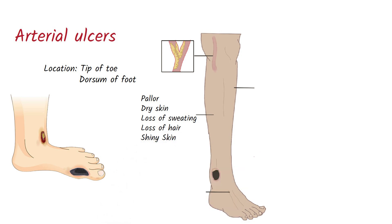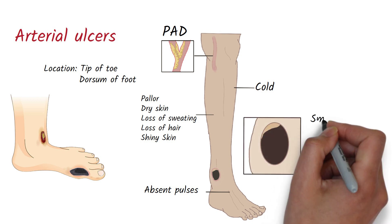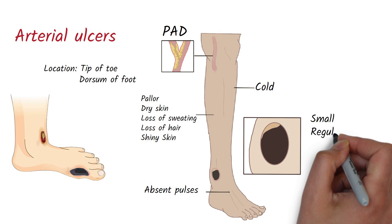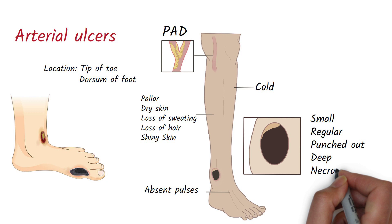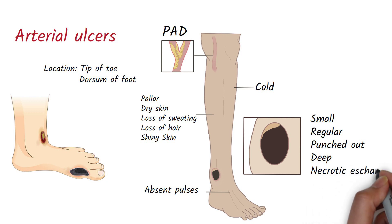In arterial ulcers there will be absent pulses and the skin will be cold to touch because of the lack of blood supply. The size of arterial ulcers is smaller than venous ulcers. They have a regular outline, a punched-out border, and the depth of the ulcer is deep. The floor of the ulcer will lack granulation tissue and therefore will look pale.